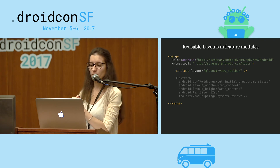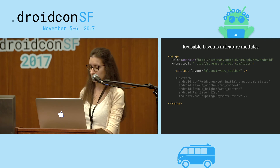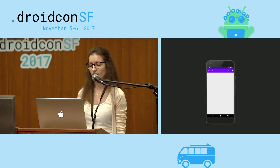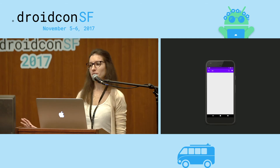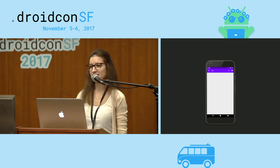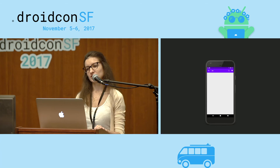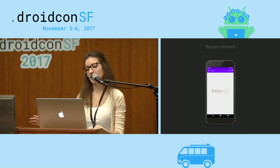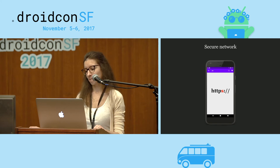Just be aware: merge and include tags won't work in feature modules. One of my favorite errors was: we're building the Instant App, it's running, it's not crashing — and there is nothing to display. The issue is that everything should be done through HTTPS. So make sure you use TLS protocols, no HTTP.